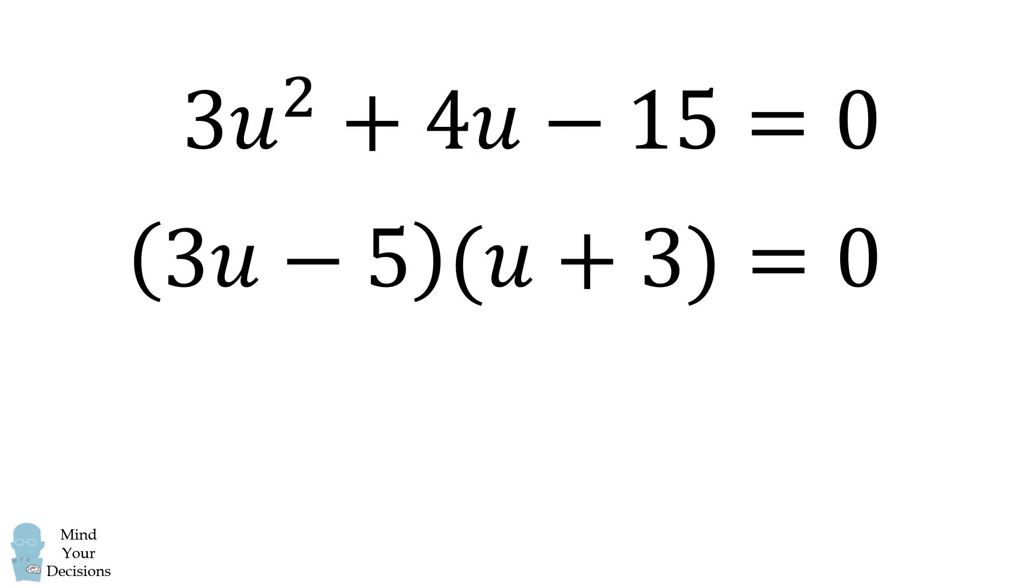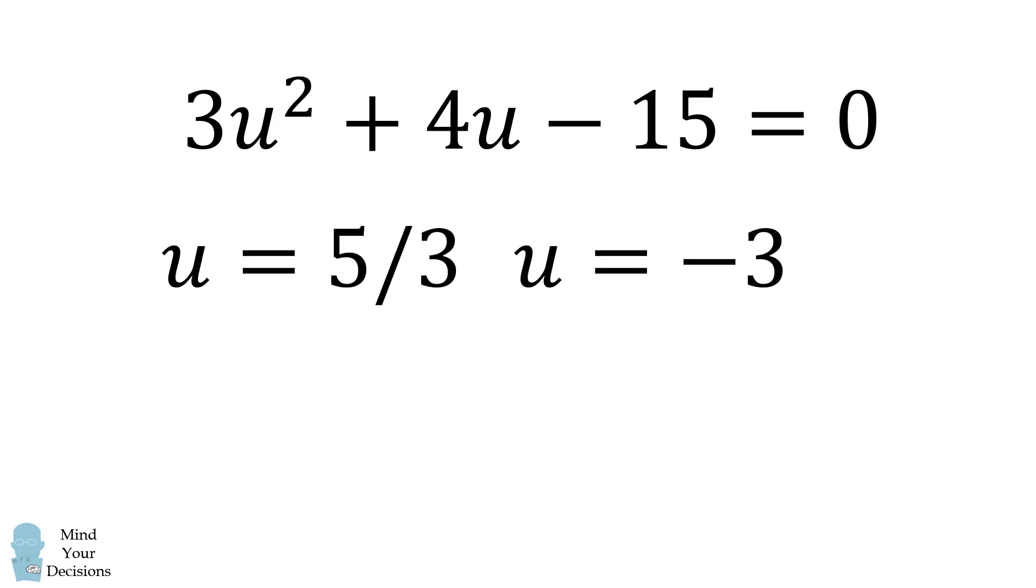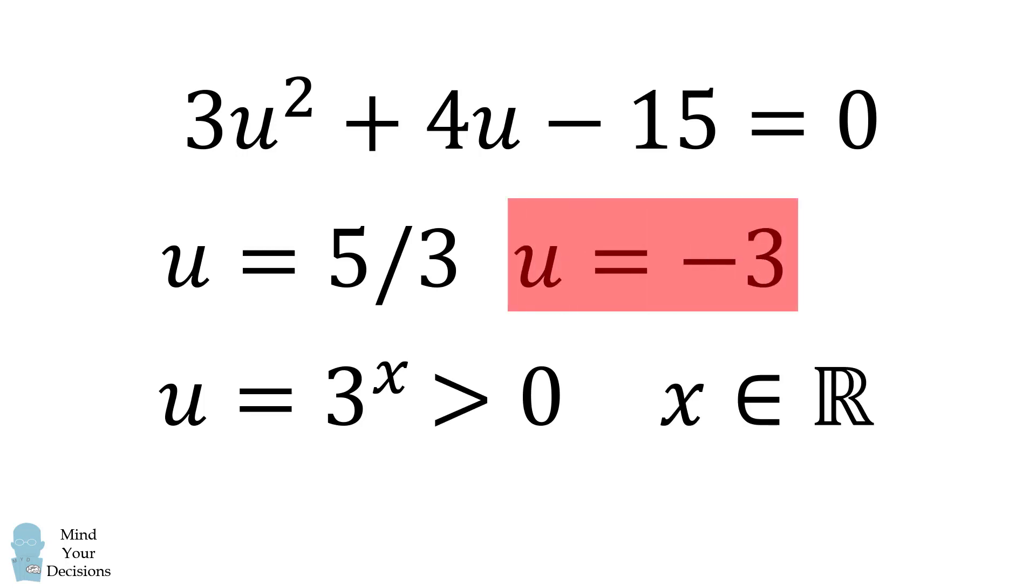We get two solutions. One is u is equal to 5 over 3, and the other is u is equal to negative 3. Now recall that u is equal to 3 to the power of x. But 3 to the power of x is greater than 0 for real values of x. Therefore, we can eliminate the solution u is equal to negative 3.